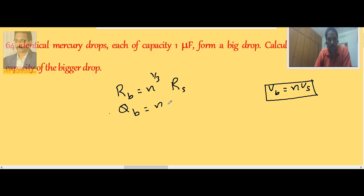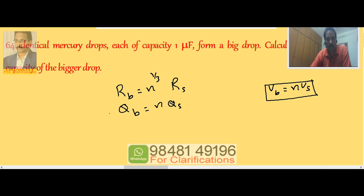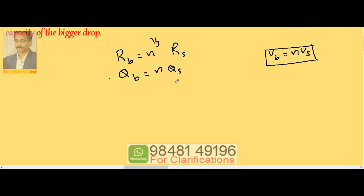Charge on the big drop is equal to n times the charge on the small drop. Now in the case of spherical drops, mercury drops or whatever you take, we know that capacity is equal to 4π epsilon naught into r. There is no dependence on charge.